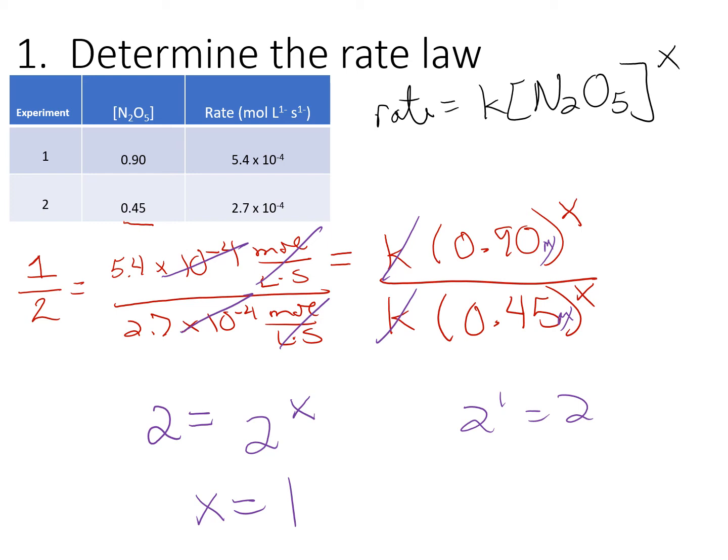Our rate law is written as such. You write rate equals K concentration N2O5, and it's raised to the first power. You don't usually write it, but I'm going to just to emphasize it. That is our rate law.